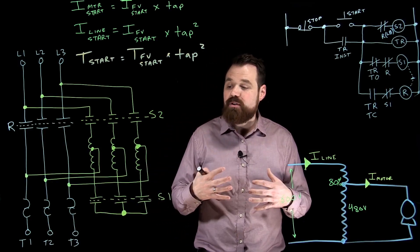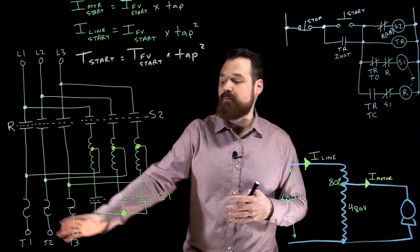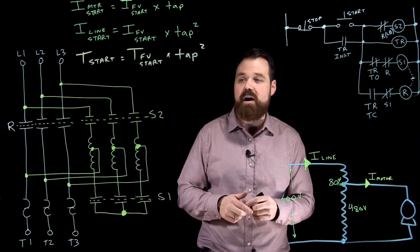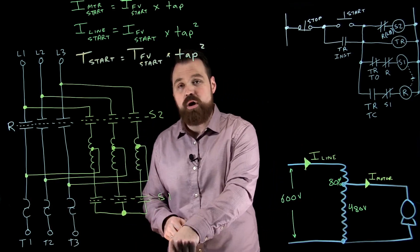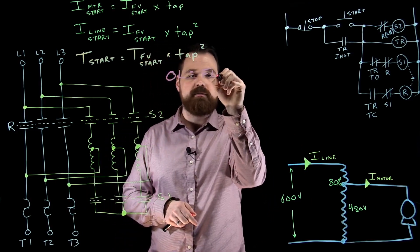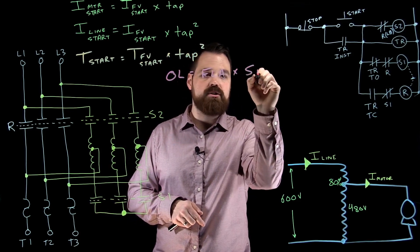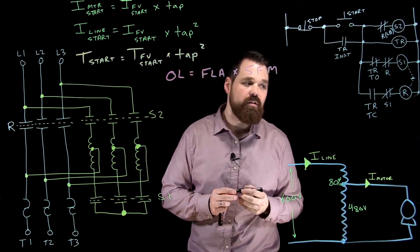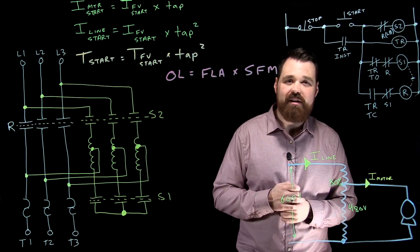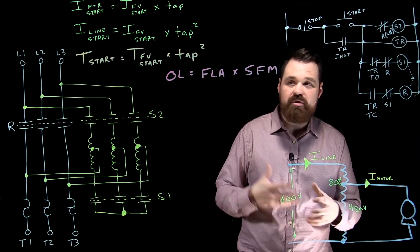As for overloads for these, there's no special overload sizing because our overloads are right there in the line. Our overloads are just going to be our FLA times whatever our service factor multiplier is. We can check 28306 for that service factor multiplier, depending on the motor.